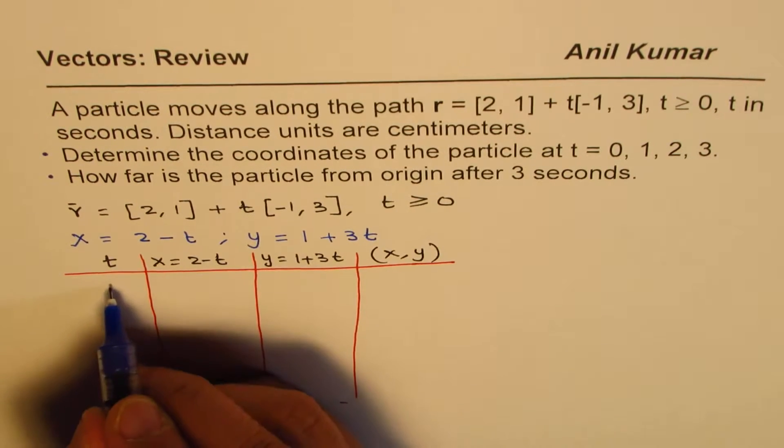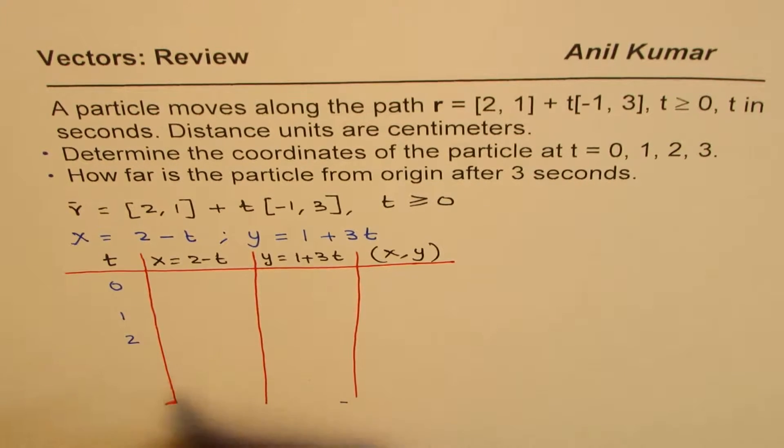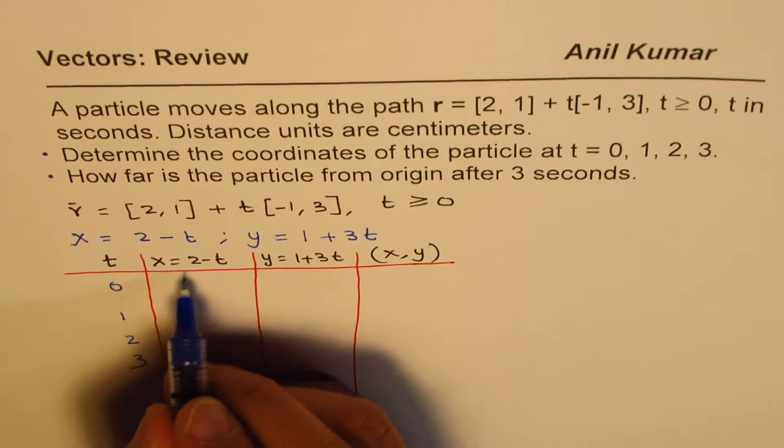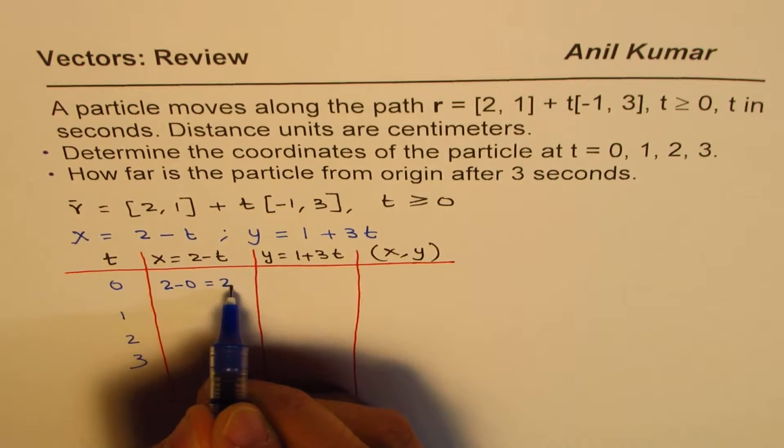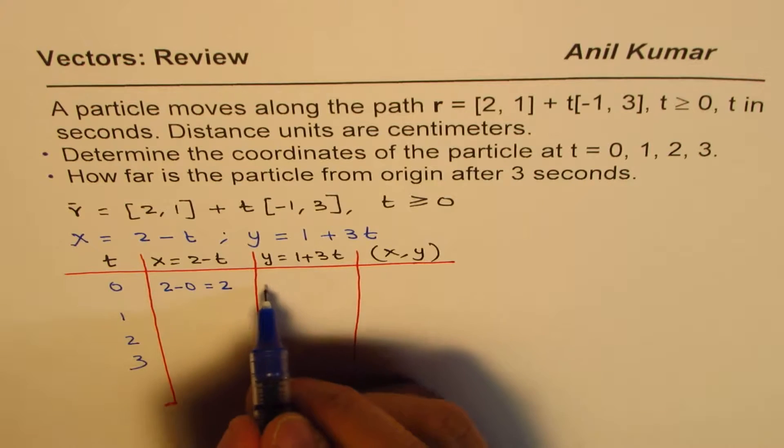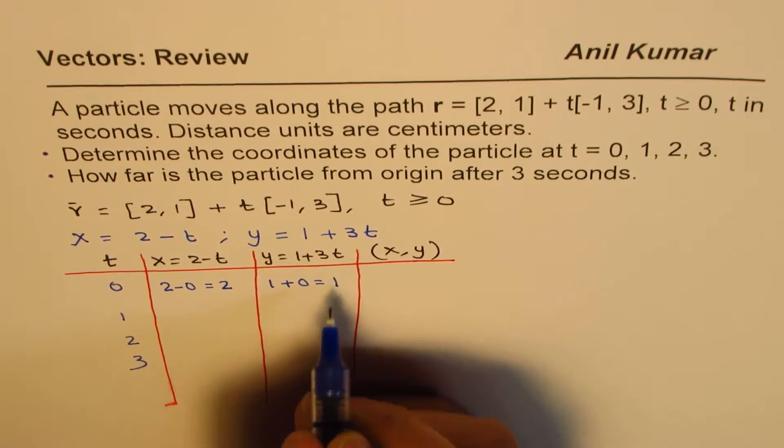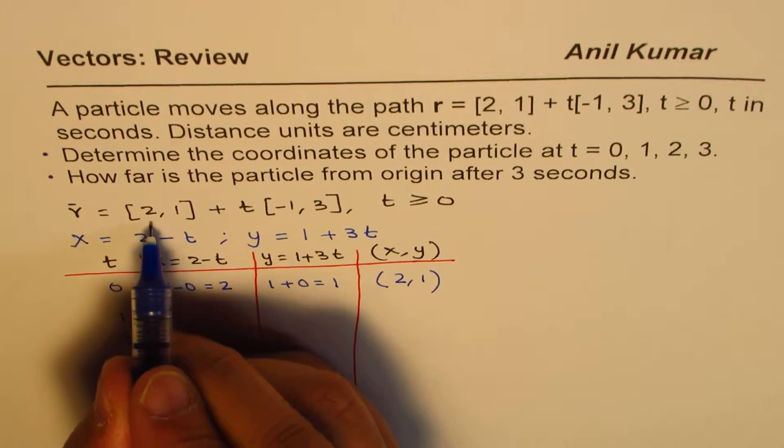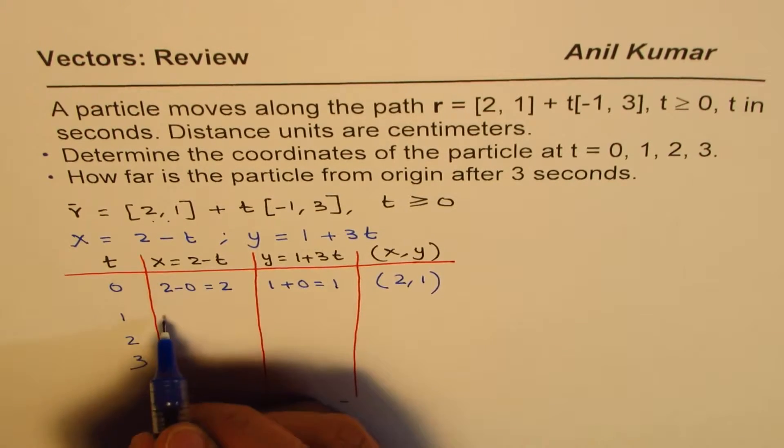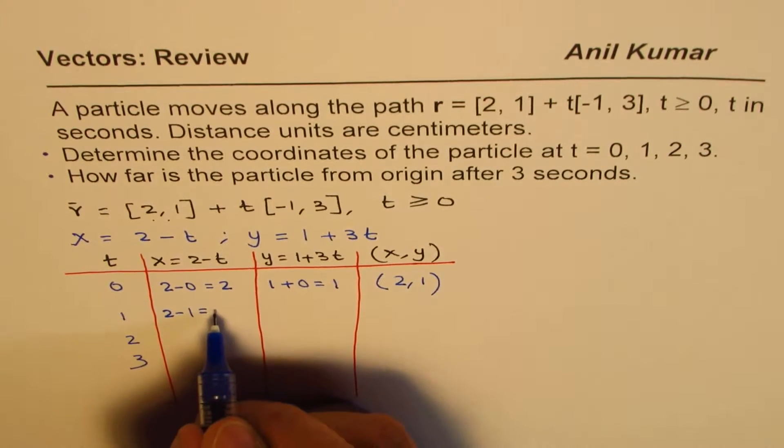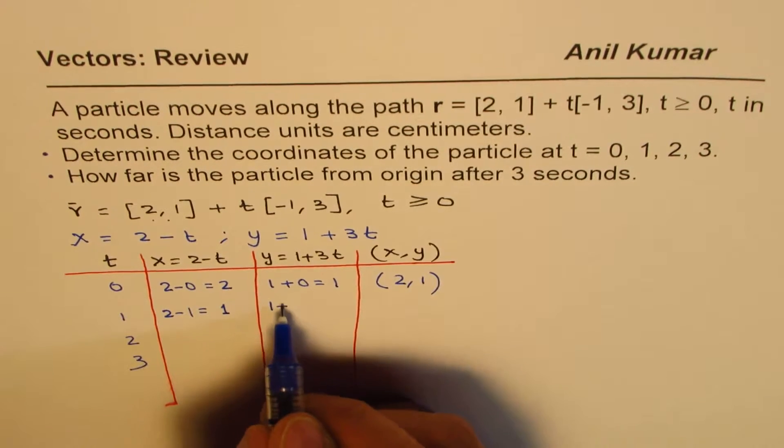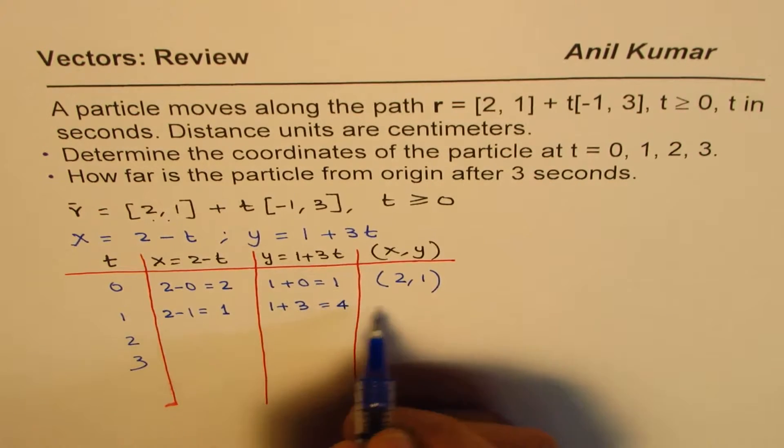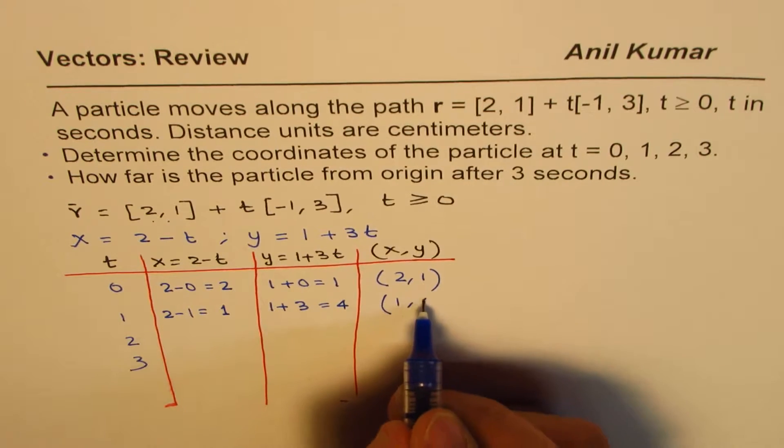We want to write for t equals 0, 1, 2, and 3. So if I write t equals 0, I get x equals 2 minus 0, which is 2. So y will be equals to 1 plus 0, which is 1, and the coordinate will be (2,1). So that is the initial coordinate. If I write 1, I get 2 minus 1, which is 1, and here I get 1 plus 3, which is 4, and therefore what we get here is (1,4).